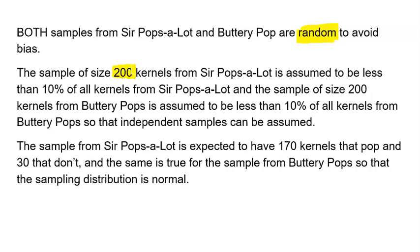All right, the sample size of 200 kernels from Sir Pops-a-Lot is assumed to be less than 10% of all kernels from Sir Pops-a-Lot. And the sample size of 200 kernels from Buttery Pops is assumed to be less than 10% of all kernels from Buttery Pops, so that there's independence between the samples. Now, I have no idea how many total kernels either of these companies has, but I'm assuming there's probably millions of popcorn kernels, so 200 is definitely under 10%. But notice how I wrote a sentence in context. The sentence represents kernels, the two different companies. Some of you guys are just saying the sample from Population 1 is under 10%, sample from Population 2 is under 10%. There's no context there, so notice how to write it really nice.